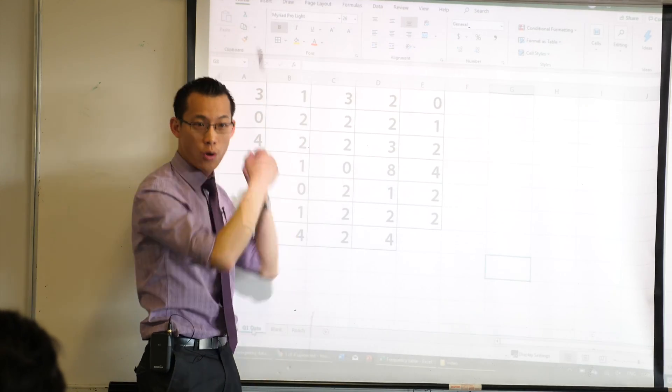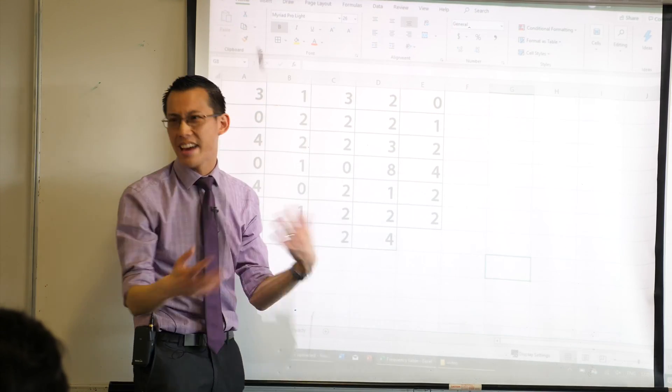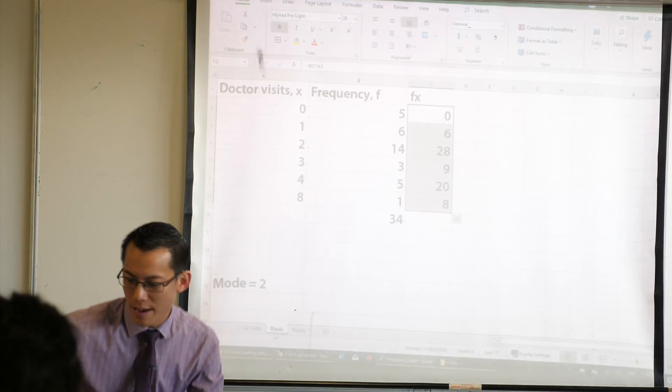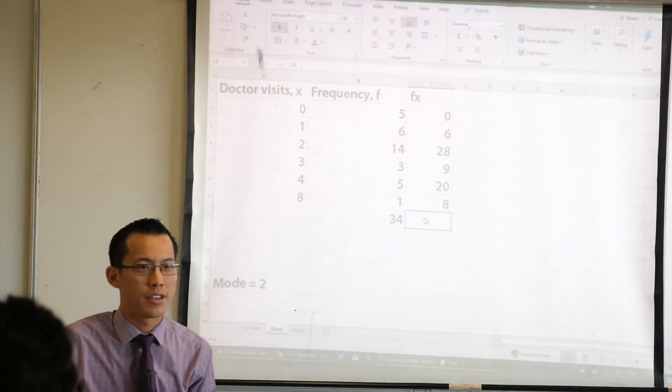I've done all the twos and all the threes. I've done everything, yeah? Thumbs up? So come back to your table. How do I add things up again? I told you a formula to do this.